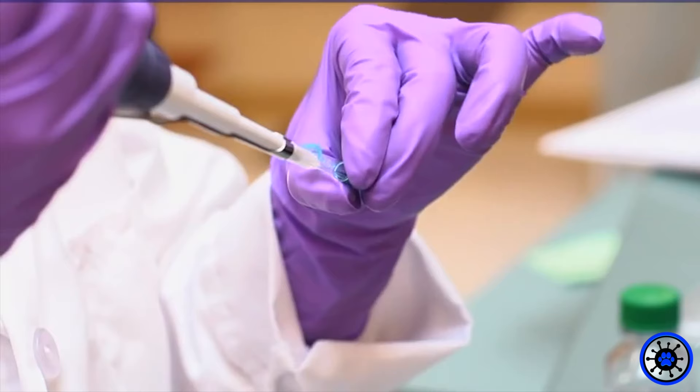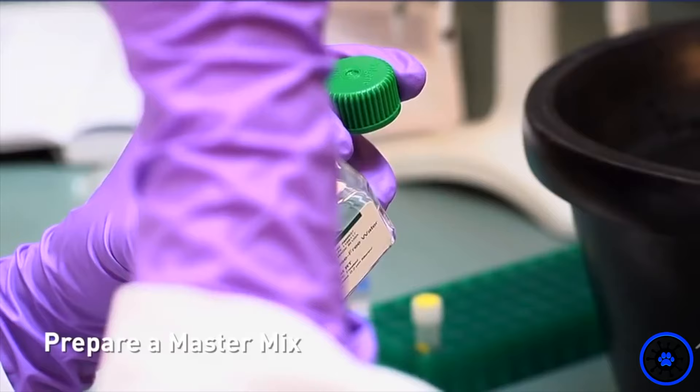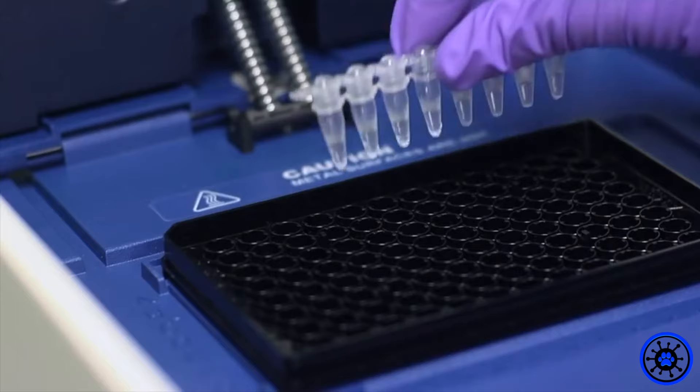Once RNA is isolated, use Qiagen 1-step RT-PCR kit. The kit contains a reverse transcriptase which creates cDNA from RNA and a polymerase which amplifies cDNA via PCR.